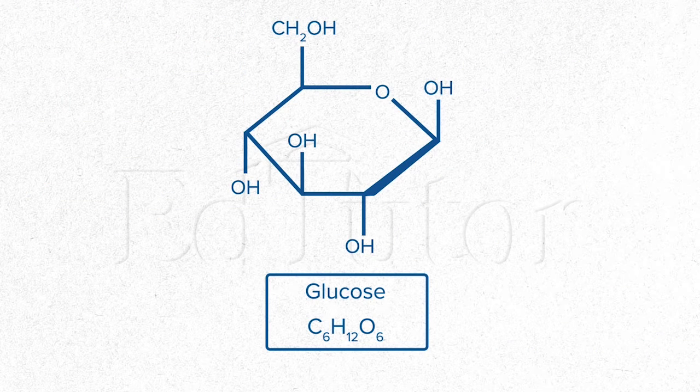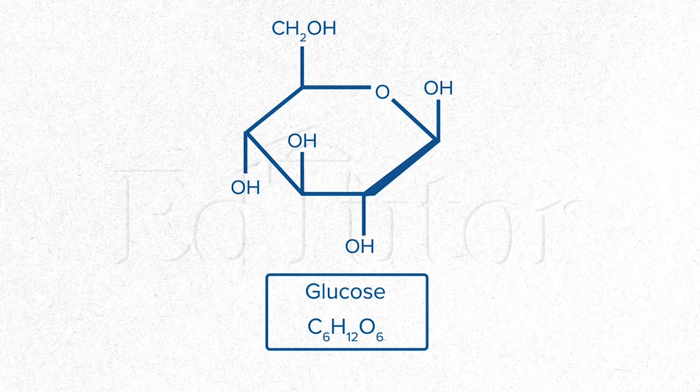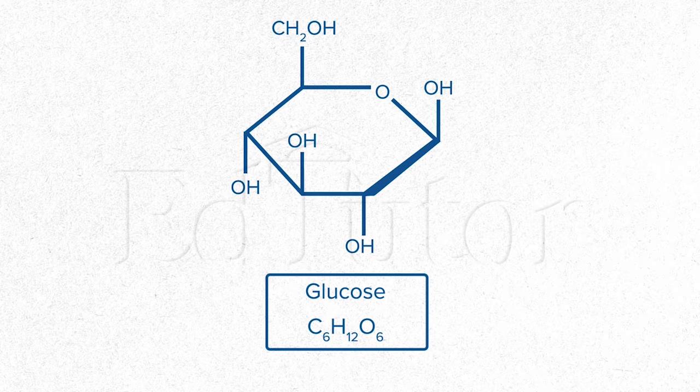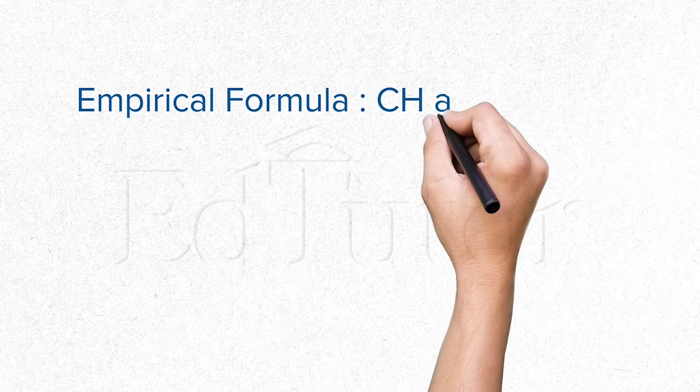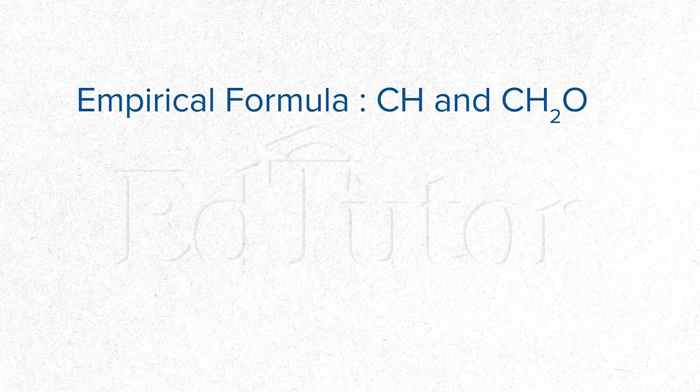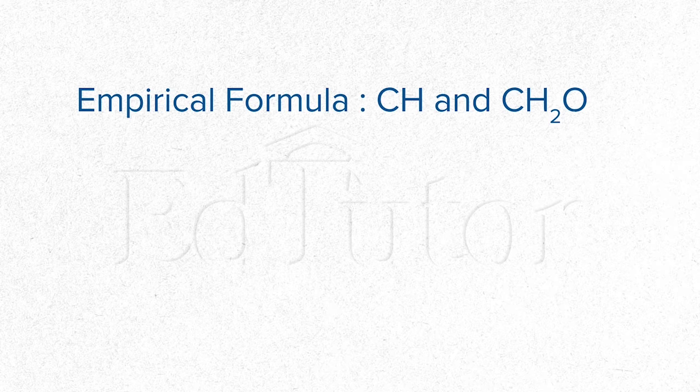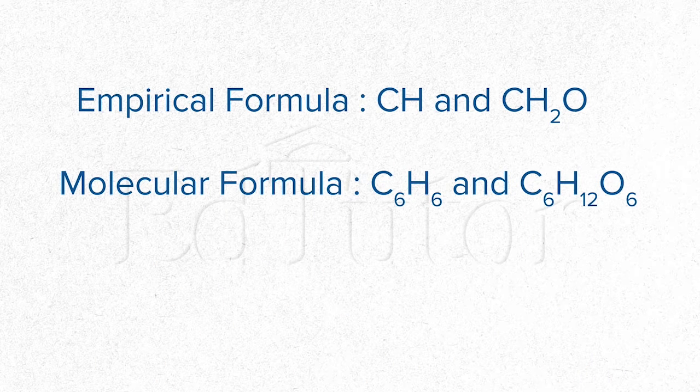The same goes for a molecule of glucose. Its molecular formula is C6H12O6. From what we already know, the empirical formula for benzene and glucose would be something like CH and CH2O respectively. This simply means that the molecular formula is the multiple of the empirical formula.